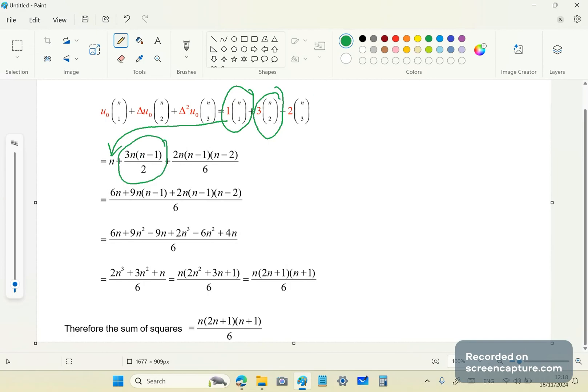You all know what n choose k is, right? It's just n factorial over (n-k) factorial over k factorial. So it's very easy to do these things. You write it down this way and then you just condense it and simplify it, and at the end of the day you have the formula for the sum of squares, which is this formula here. Now you could do the same thing with cubes.